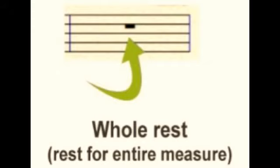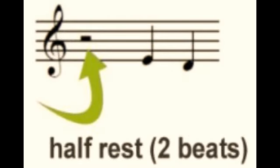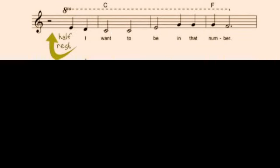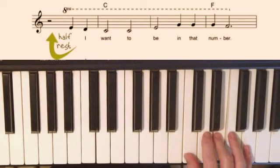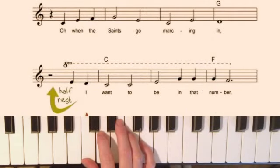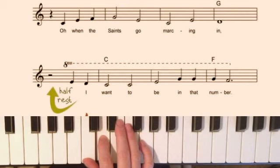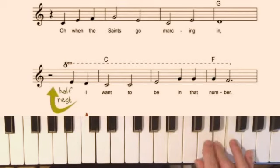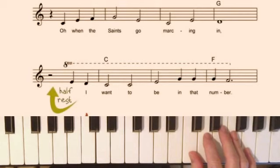The half rest is just like a half note — you rest for two beats. Let's jump down to line three of 'When the Saints Go Marching In.' There's the half rest, so you count: one, two, three, four, one. Let me show you starting from the last measure of line two so it's clear: one, two, three, four — one, two, three, four. That's how you do a half rest.